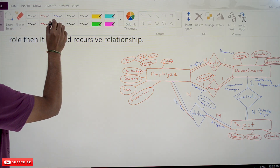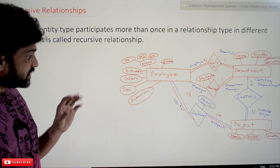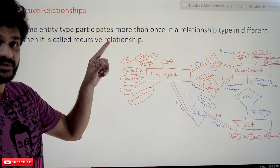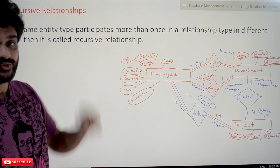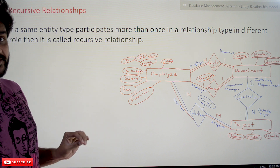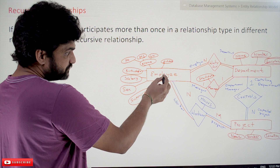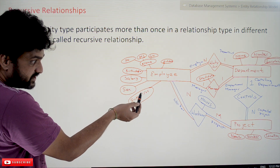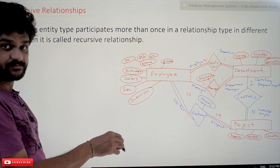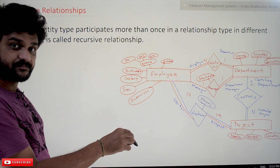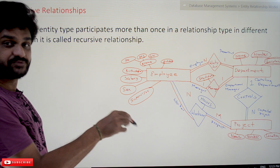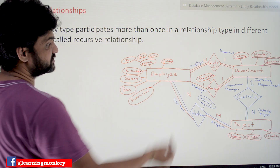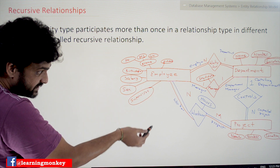Let's understand this using the employee example. Consider the supervisor attribute — we have discussed in our requirements that every employee will have a supervisor. So what it states is: this employee entity type with the attribute of supervisor — the supervisor is also an employee. Think about it. This point is important to understand: the supervisor is also an employee.